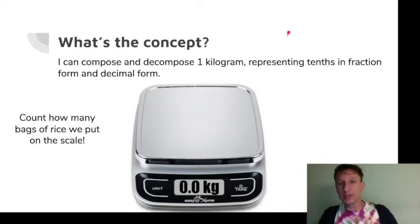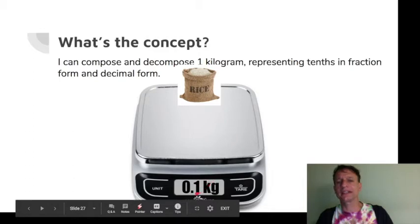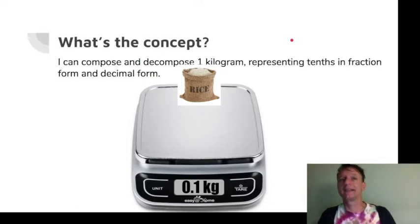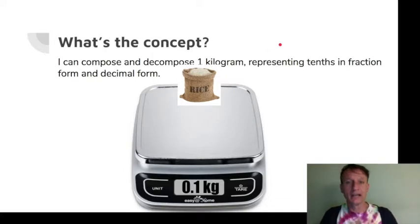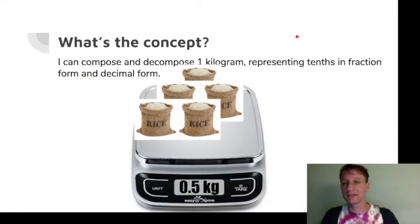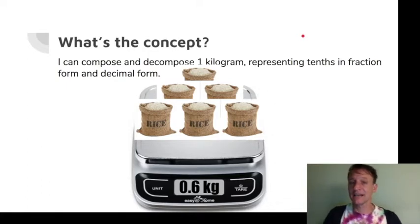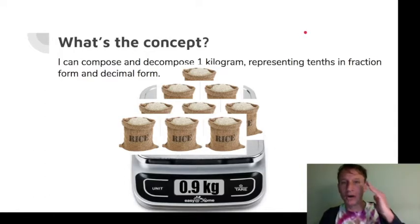We're going to put little bags of rice on our scale. There's the first one — and you might be tempted to say one kilogram, but you see that zero and then the decimal point and then the one. It weighs one tenth kilogram. That is the mathematically correct way to say it. Let's keep adding: two tenths kilogram, three tenths, four tenths, five tenths, six tenths, seven tenths, eight tenths, nine tenths kilogram.